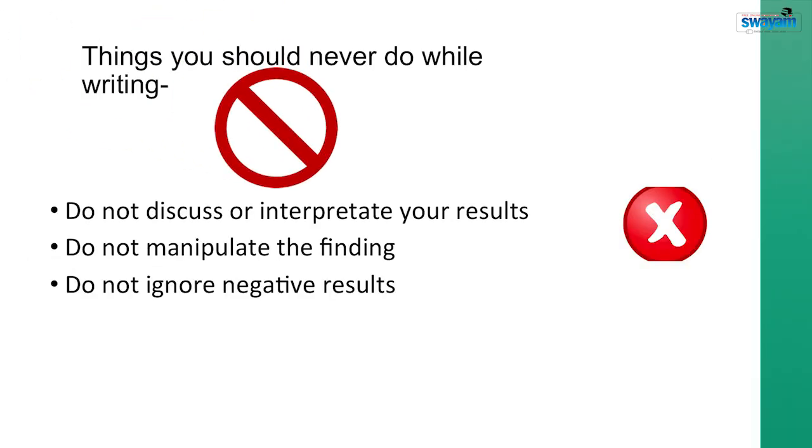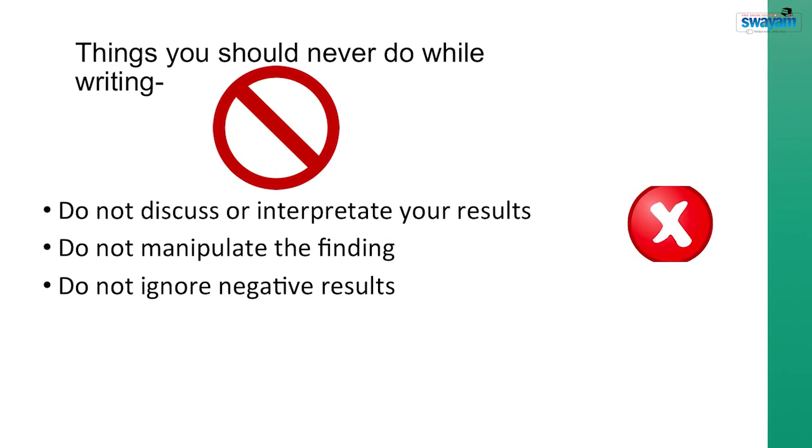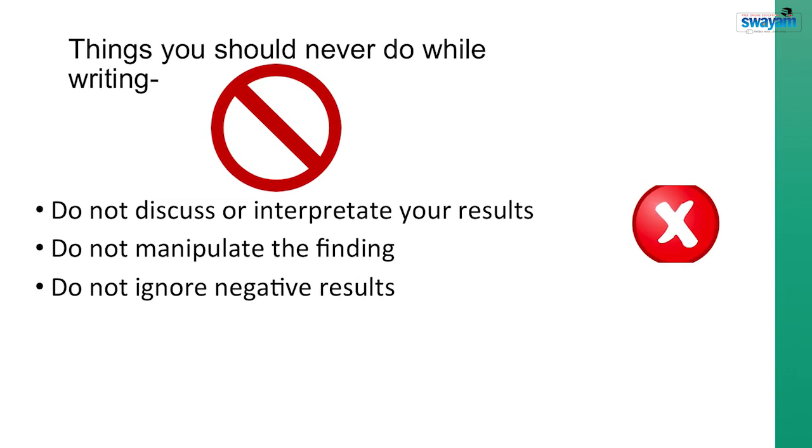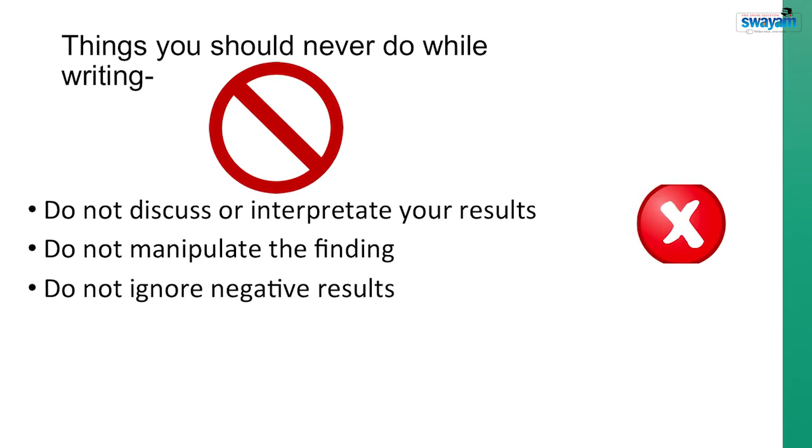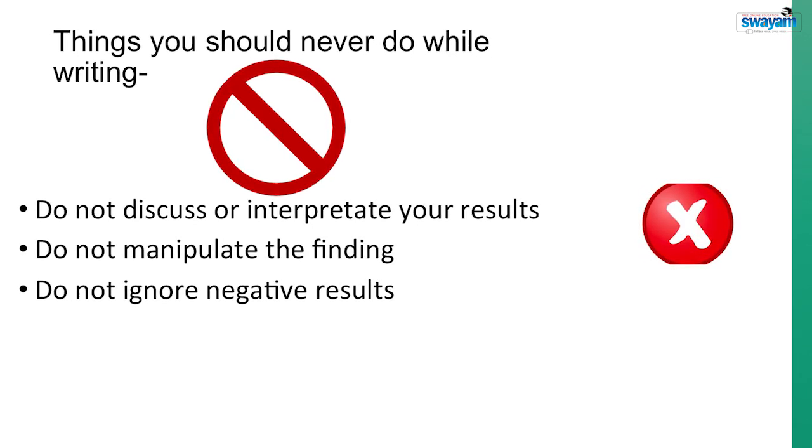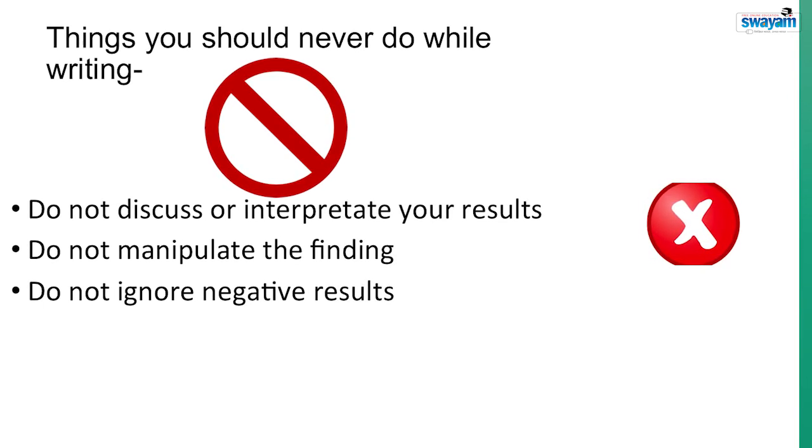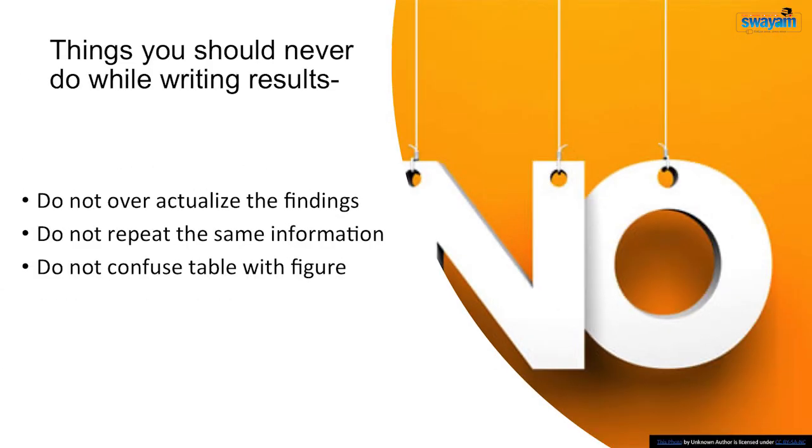Things you should never do while writing the result part: Do not discuss or interpret your result here if resultant discussion are to be discussed in two different parts. Do not manipulate the findings because an expert reviewer can easily trace the manipulations and this may result in the bad consequences. Even a small manipulation can make your whole work questionable and unreliable. Do not ignore negative results. Do not over actualize the findings. Do not repeat the same information. Do not confuse table with figure.